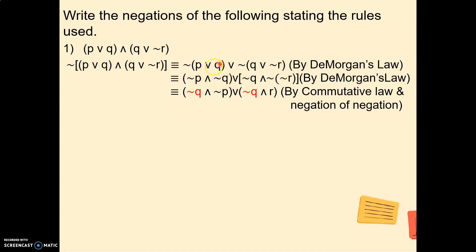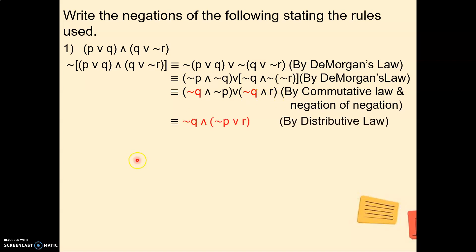Applying De Morgan's law again: (¬P∧¬Q)∨(¬Q∧¬¬R). In the next step, ¬¬R = R, and using the Commutative law we rearrange to get (¬Q∧¬P)∨(¬P∨R). Then by the Distributive law, ¬Q is factored out, giving ¬Q∧(¬P∨R). That is the final answer.